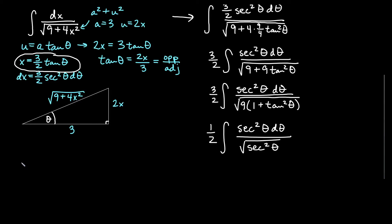So that gives me 1 half integral of secant squared theta d theta over secant theta. We reduce and get 1 half integral of secant theta d theta.